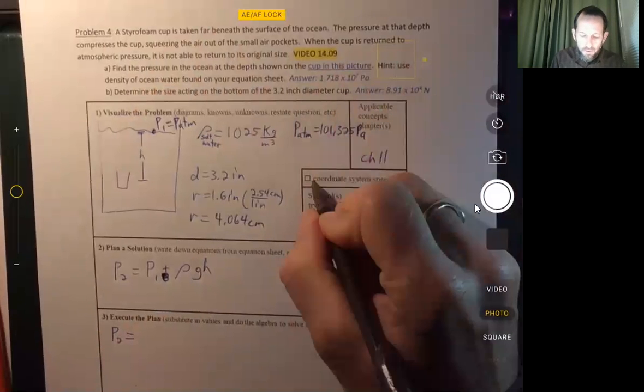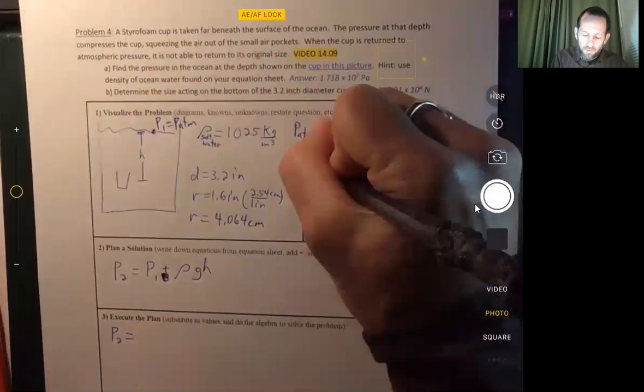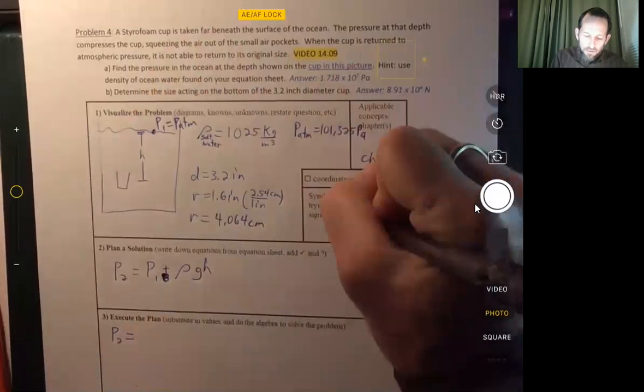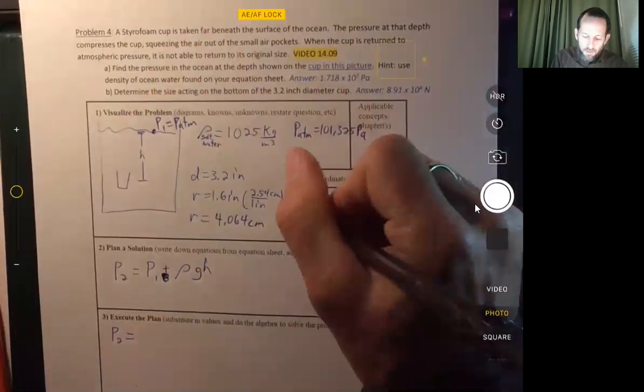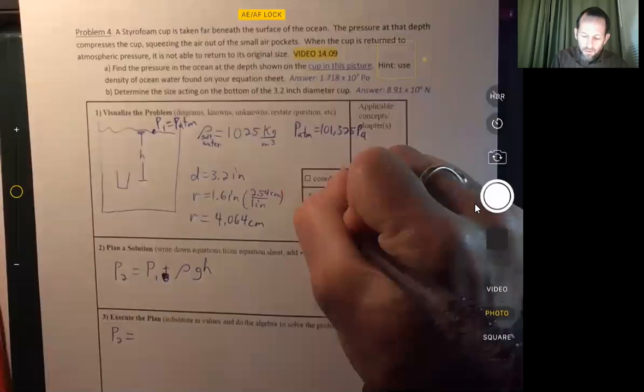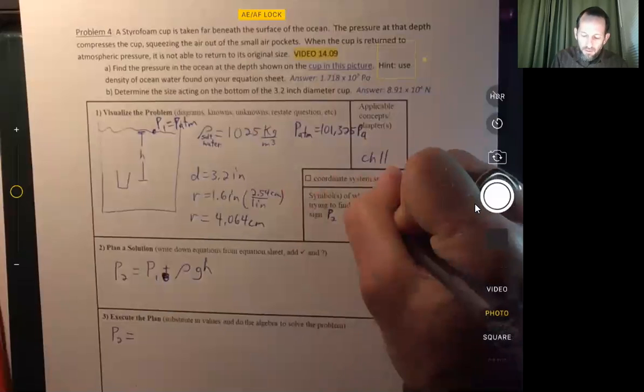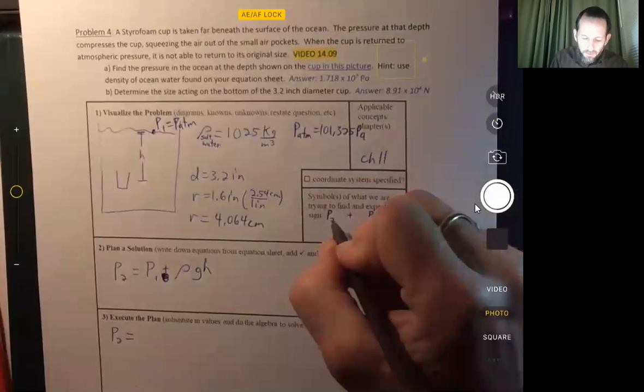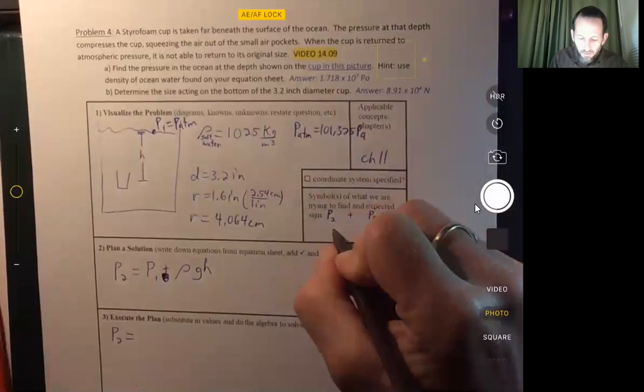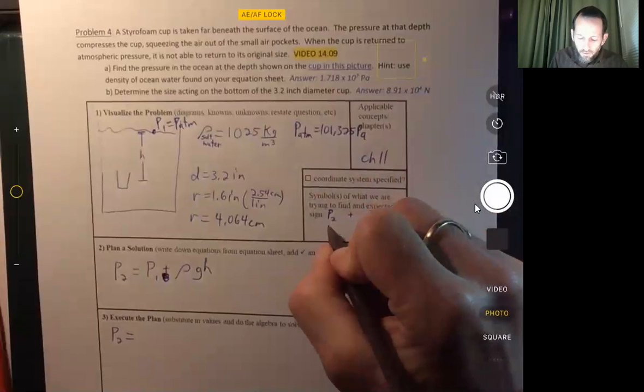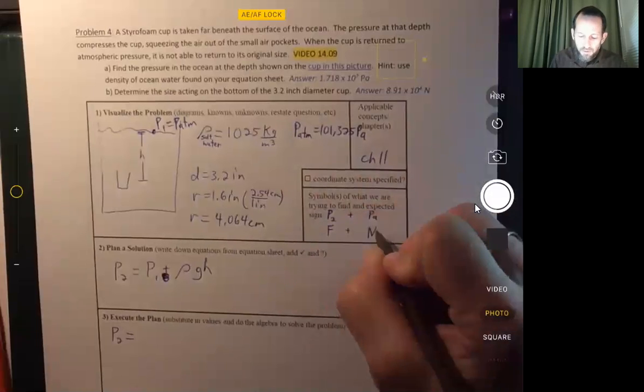We need a coordinate system. We may not need one. And the symbol of what we're trying to find, we're trying to find P2 should have a positive value and units of pascals. And we're also trying to figure out the force and that should have a positive value and be measured in newtons.